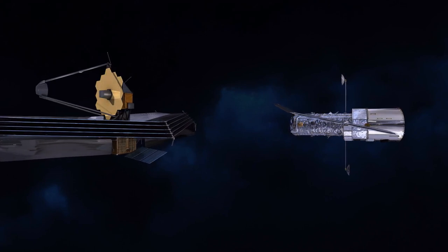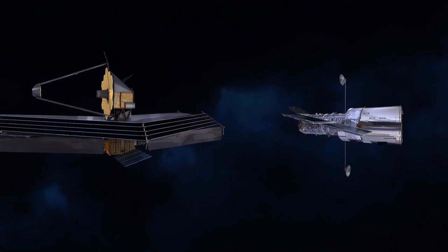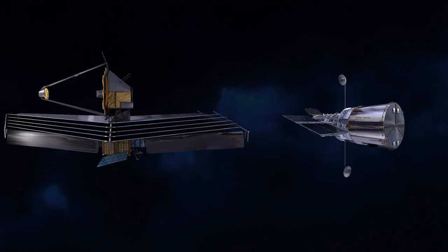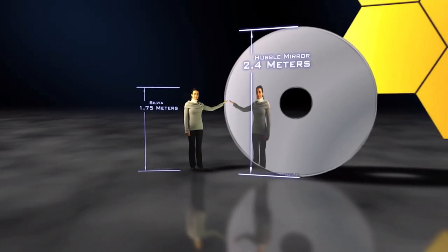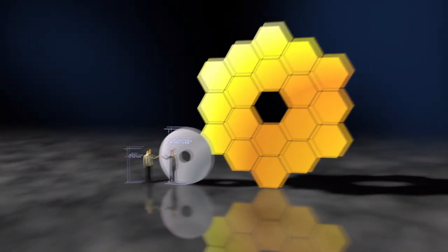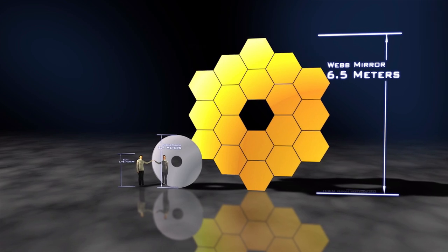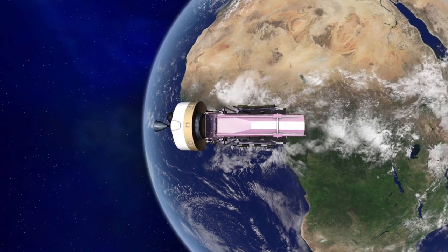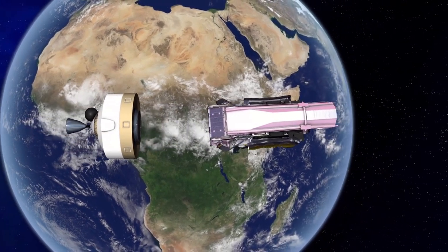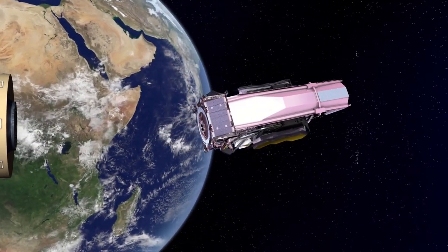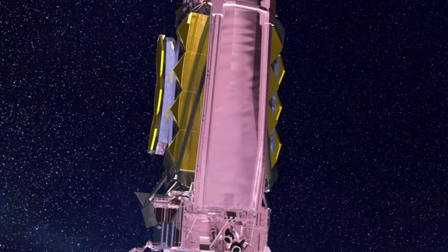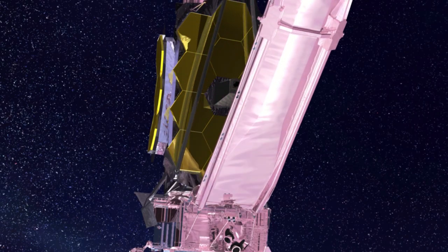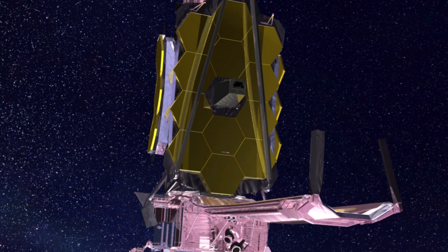James Webb was launched on December 25, 2021 and is six times the size of Hubble and 100 times more powerful. Still, it weighs half than what Hubble is. For perspective, its sunshield is as big as a tennis court. Its mirrors are 6.5 meters wide.